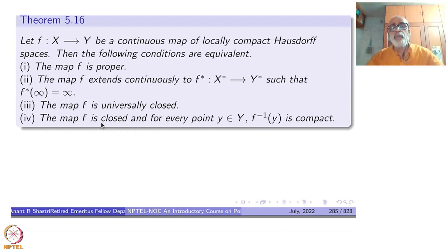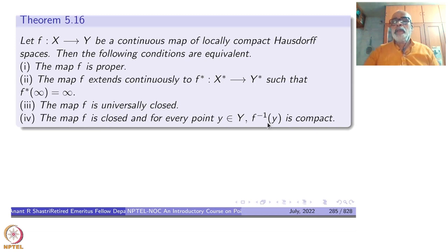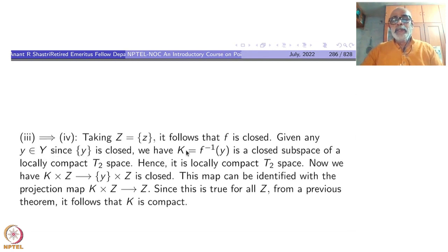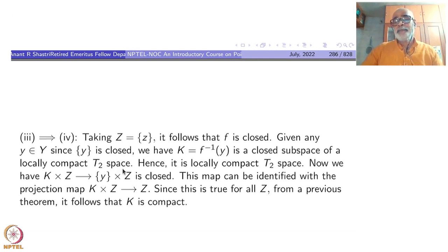Now three implies four. Universally closed implies closed — that's clear. The only remaining thing is that the inverse image of a single point must be compact. Taking Z as a singleton, it follows that f is closed. Now given any y in Y, singleton y is closed. Put K equal to f-inverse of y — that will be a closed subset of a locally compact Hausdorff space.